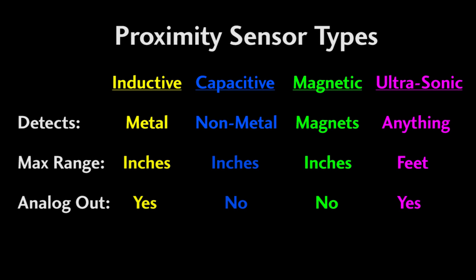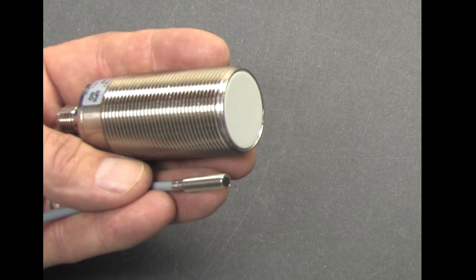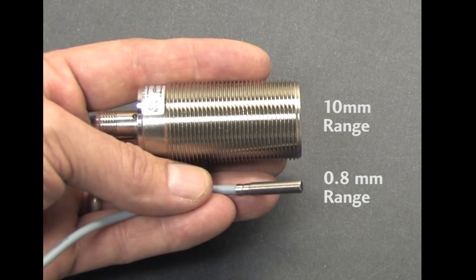Some proximity sensors do have analog outputs so they can do some distance sensing, which is really helpful when setting up the system to make sure the sensor is in a good range to detect the object. Note that the ones that operate over larger distances are going to be the larger units.